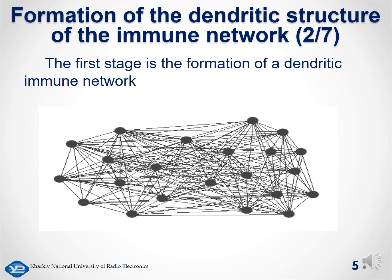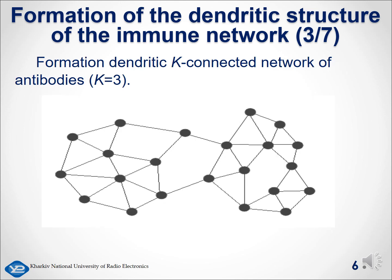This idea is borrowed from the classification algorithm K-nearest neighbors (KNN). This slide shows the dendritic K-connected network of antibodies with parameter K equals 3, which can vary in the range from 2 to many connections. Thus, by reducing the number of connections between antibodies in the network from the initial graphs with complete connections between objects, a dendritic structure of the antibody network is formed, in which cluster centers are subsequently selected.